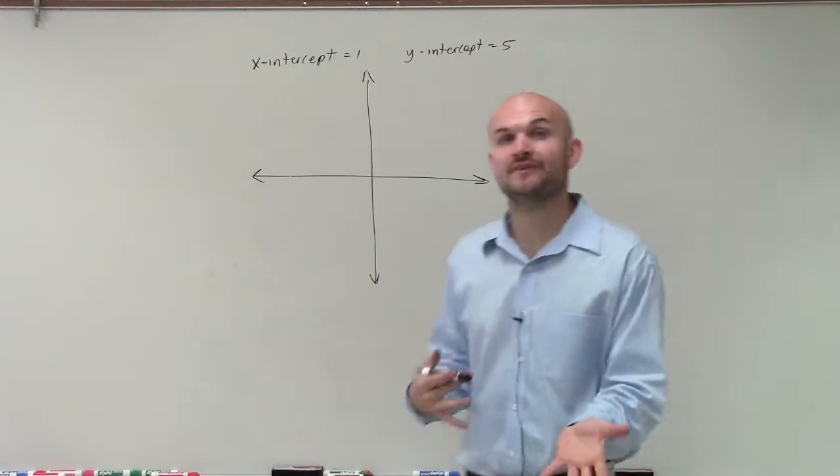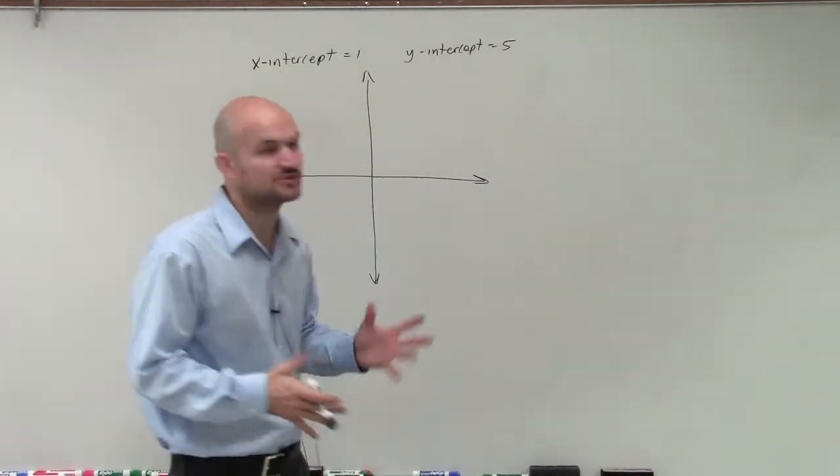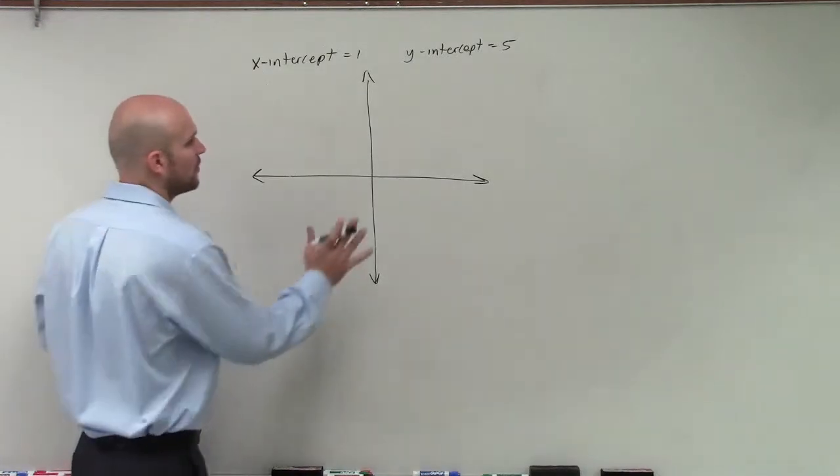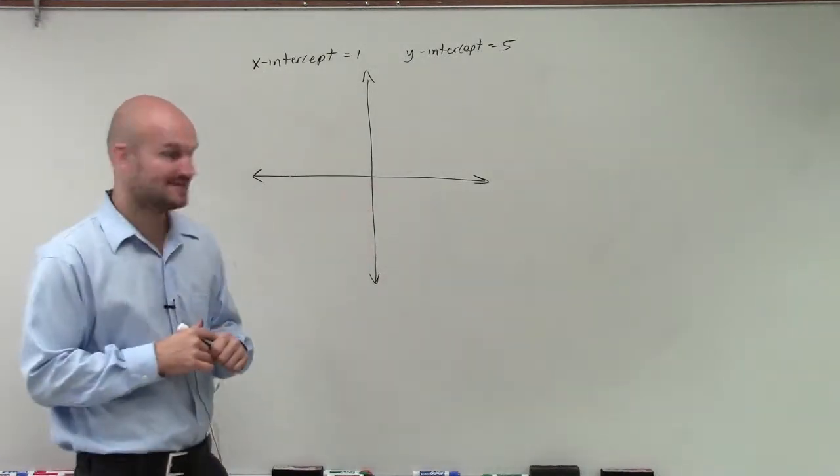Now, it's important to understand when graphing, especially using intercepts, what exactly do the intercepts mean and what are we graphing on? So this is what we call a coordinate grid.